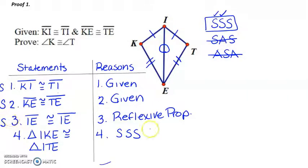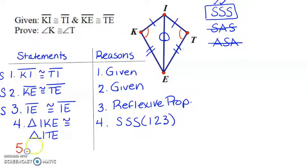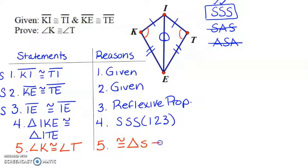Using the left-margin notation, I already know the three line numbers for the parentheses, so I have a well-organized proof. Now I can say angle K is congruent to angle T, because if I'm given congruent triangles then corresponding parts of congruent triangles are congruent, and my congruent triangles are in line four.